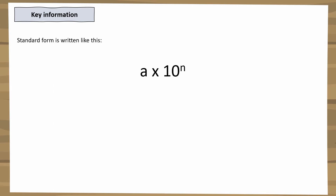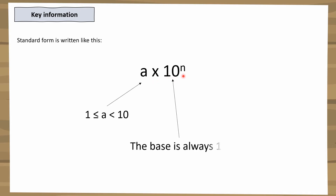Standard form is always written as a number times 10 to a given power. The first number — call it a — must be between 1 and 10: it can equal 1 but cannot equal 10, so it can be decimals like 2.5, or even 9.999 recurring, but not 10. It's always multiplied by 10, which is called the base — we always use base 10. The power, called n, can be negative for small numbers or positive for large numbers.